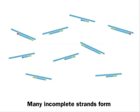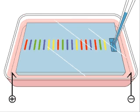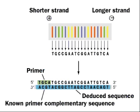Gel electrophoresis separates the strands by length. An automatic device scans the gel, and colors identify the DDNTP bases in order. So now it's easy to figure out the original DNA sequence by the base pairing rules.